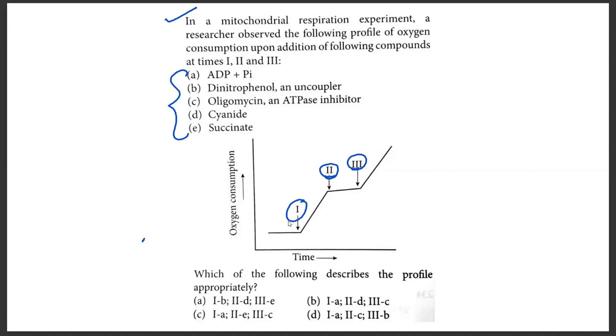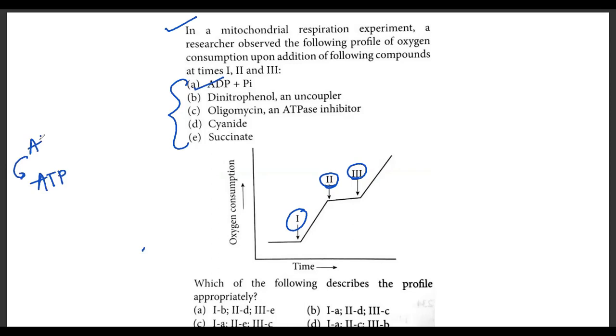Such a sharp increase is observed when you add some raw material which is actually required. Here, the raw material required is nothing but ADP. For the production of ATP, the major raw material is ADP plus Pi. The limiting factor is ADP plus Pi. If you have large amounts of ADP plus Pi, there will be higher consumption of oxygen because more NADH2 and FADH2 will be oxidized, more electrons will be passed, and more H plus will be pumped.